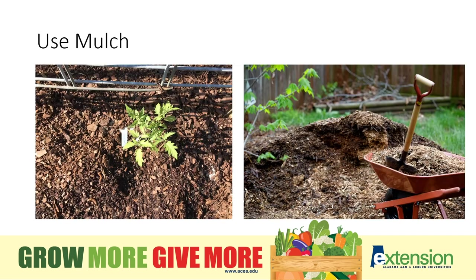The next tip is to use mulch. Mulch is a great way to slow the spread of fungal spores left in the soil from previous years. That mulch barrier prevents the splashing of spores from debris from previous years up onto the leaves of the plants. Mulch is also great for helping to maintain soil moisture and prevent problems such as blossom end rot on tomatoes.